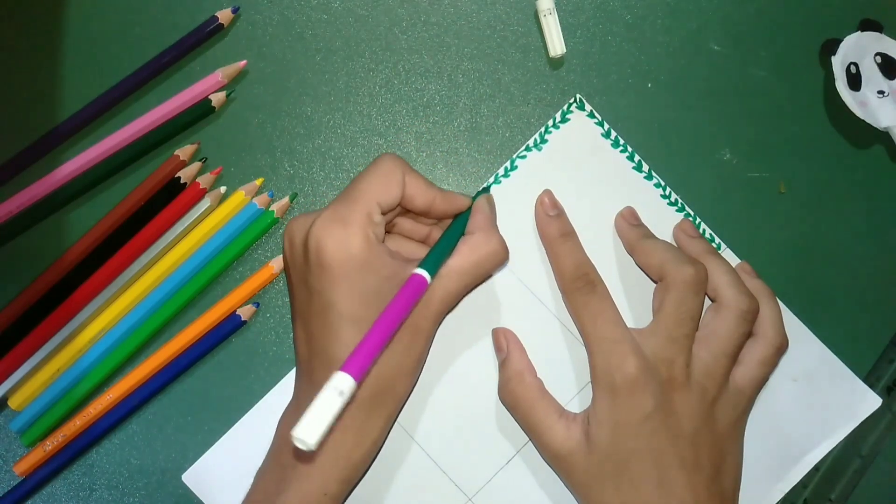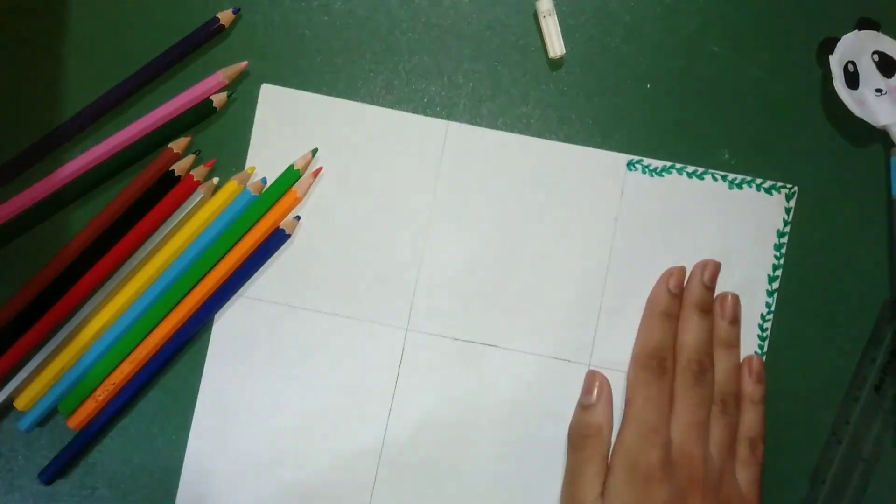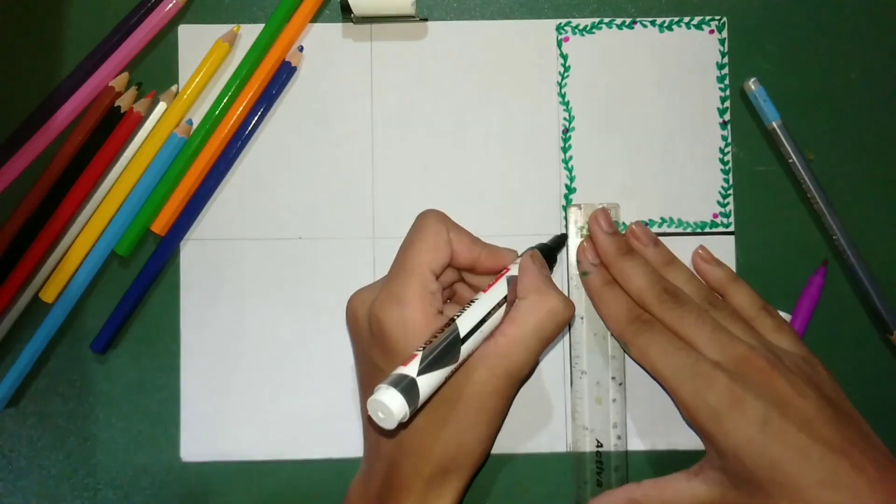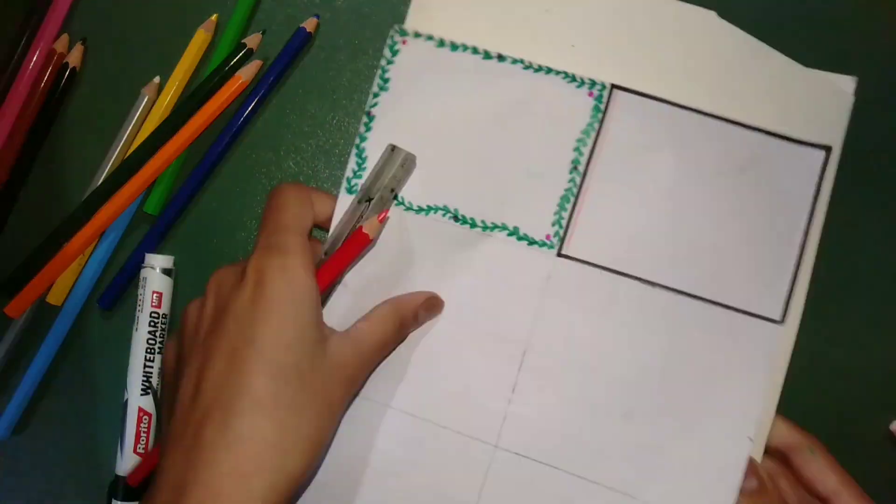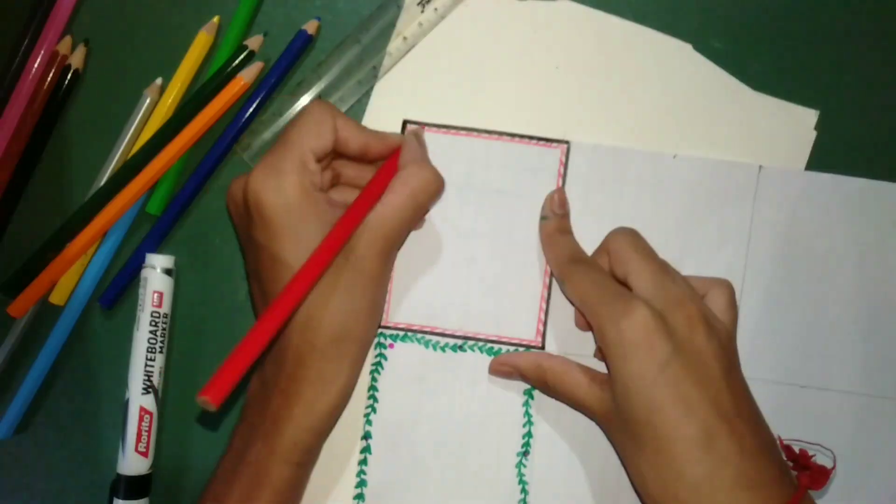I have used white paper here, but you can use colorful paper. I have made a black border. I have put some red pencil. I will make some black dots here.